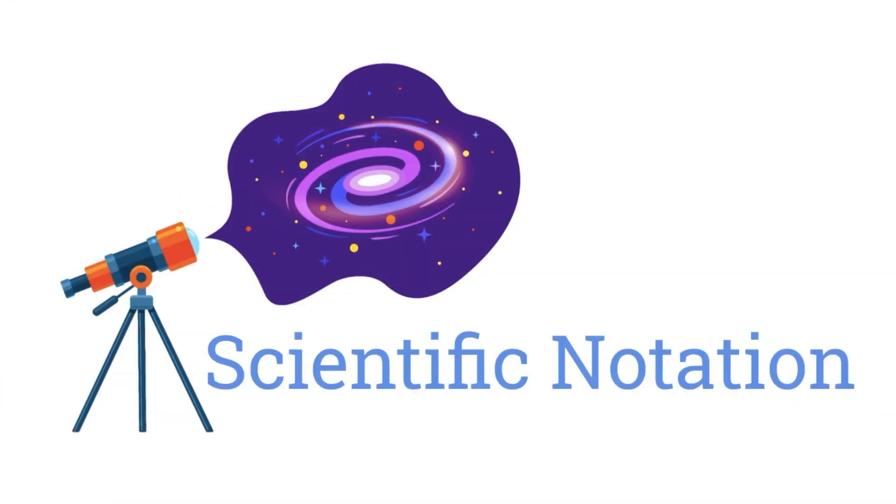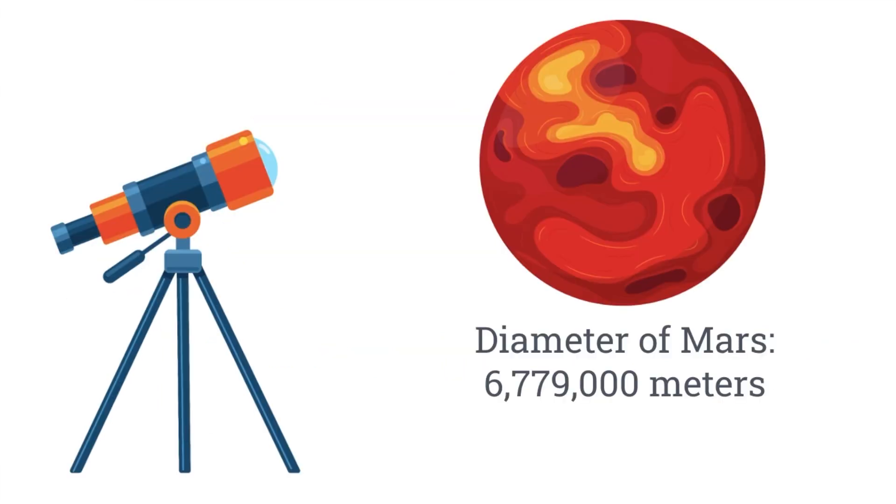In this video, you will learn about scientific notation. You can use scientific notation as a shorthand when you have numbers that are very large, such as the diameter of the planet Mars, 6,779,000 meters. But how?